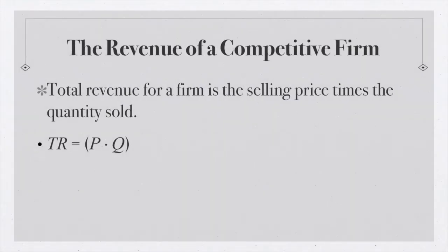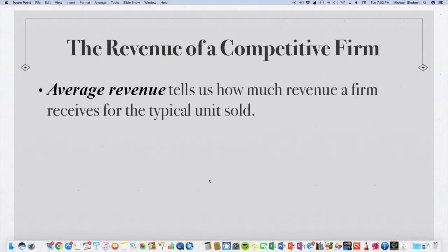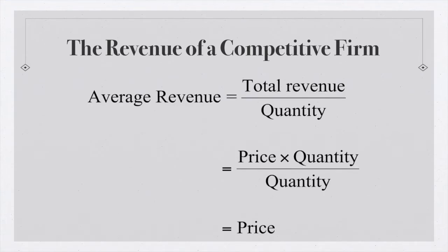For the competitive firm — and actually for every firm — total revenue is price times quantity sold. Average revenue tells us how much revenue a firm receives from the typical unit sold. Average revenue is total revenue over quantity. Since total revenue is price times quantity, price times quantity over quantity equals price. So for the competitive firm, the average revenue is actually the price of the good you're selling. If you're selling it for $8, on average that's how much you're going to bring in.